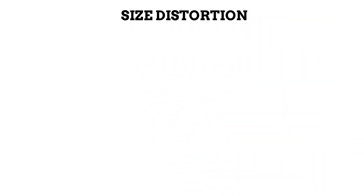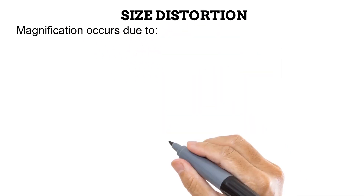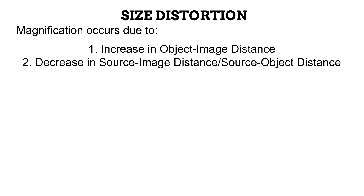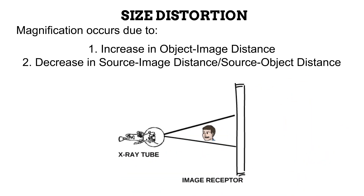Let us look at size distortion — magnification. That occurs due to two major reasons: an increase in the object image distance, and a decrease in the source image distance or source object distance. We learned about two out of three of these terms in the previous video. We also pointed out how moving the anatomy away from the image receptor will give the X-ray beam more room to diverge further, producing a magnified and fairly unsharp image. We also pointed out that if we move the tube away from the image receptor — that is, increase the SID — compensation for the increased OID is made, and magnification is prevented. Take note that when increasing the SID to compensate for an increased OID, for every one inch of OID that was added, a seven inch increase in SID is needed to prevent magnification.